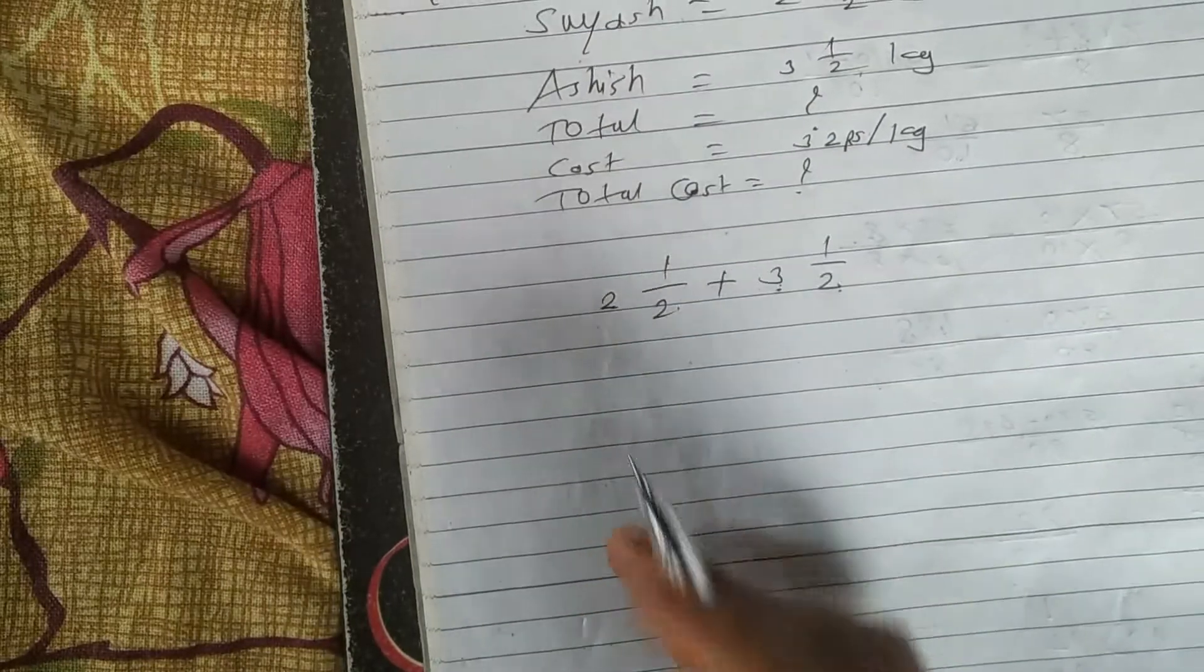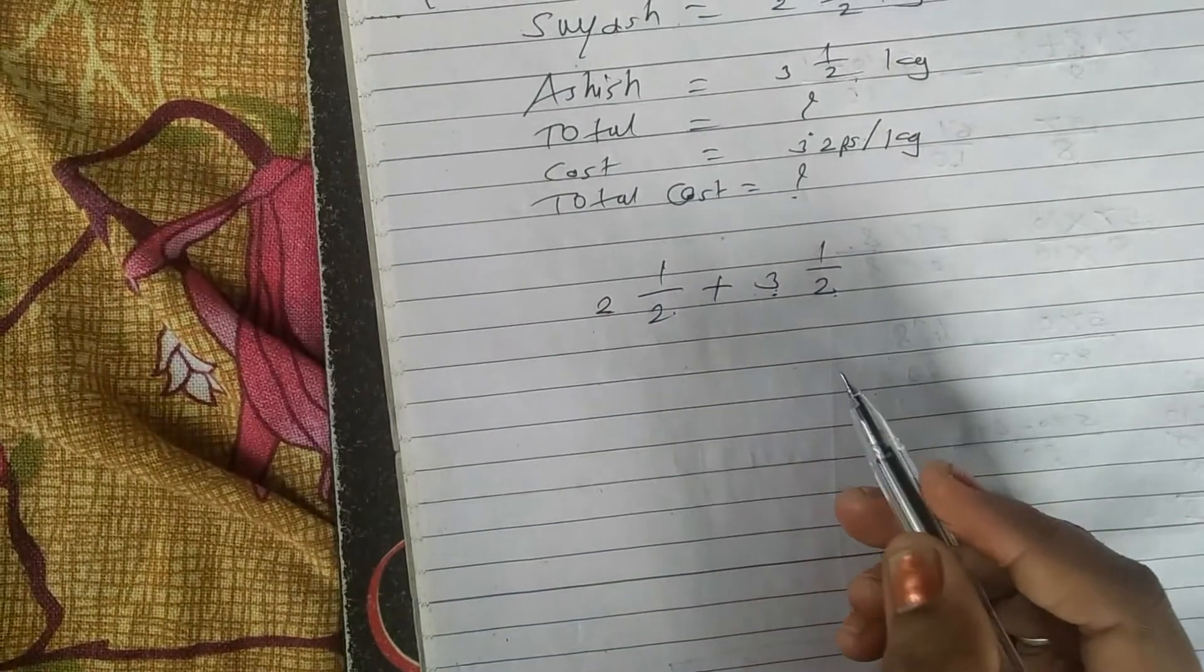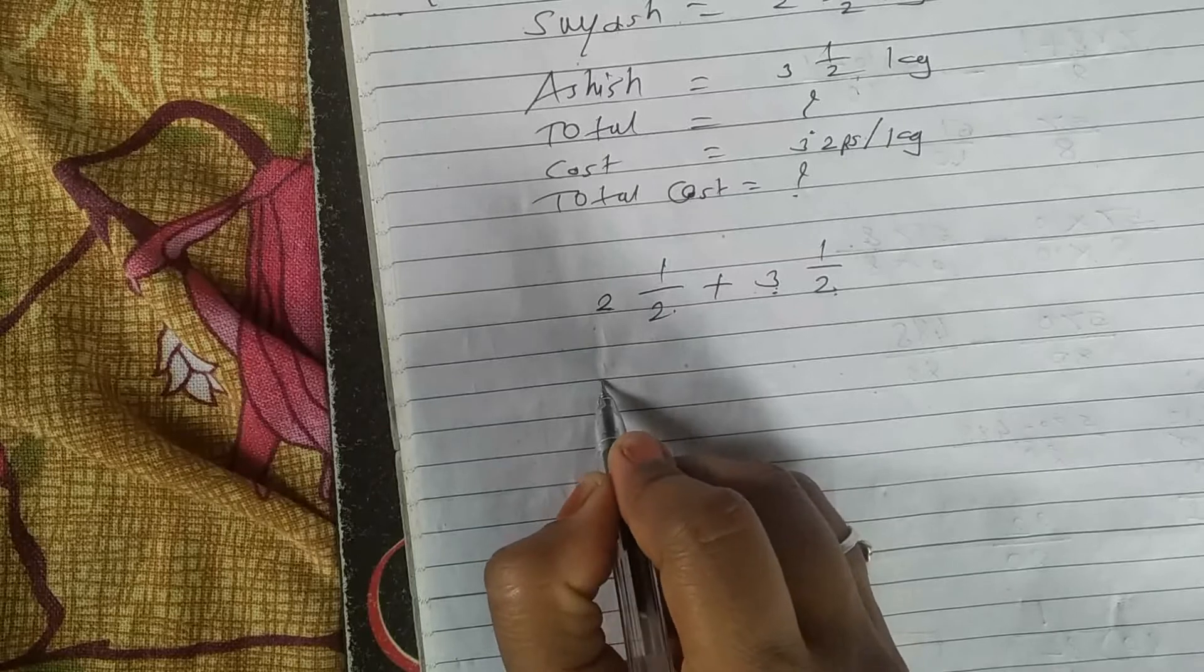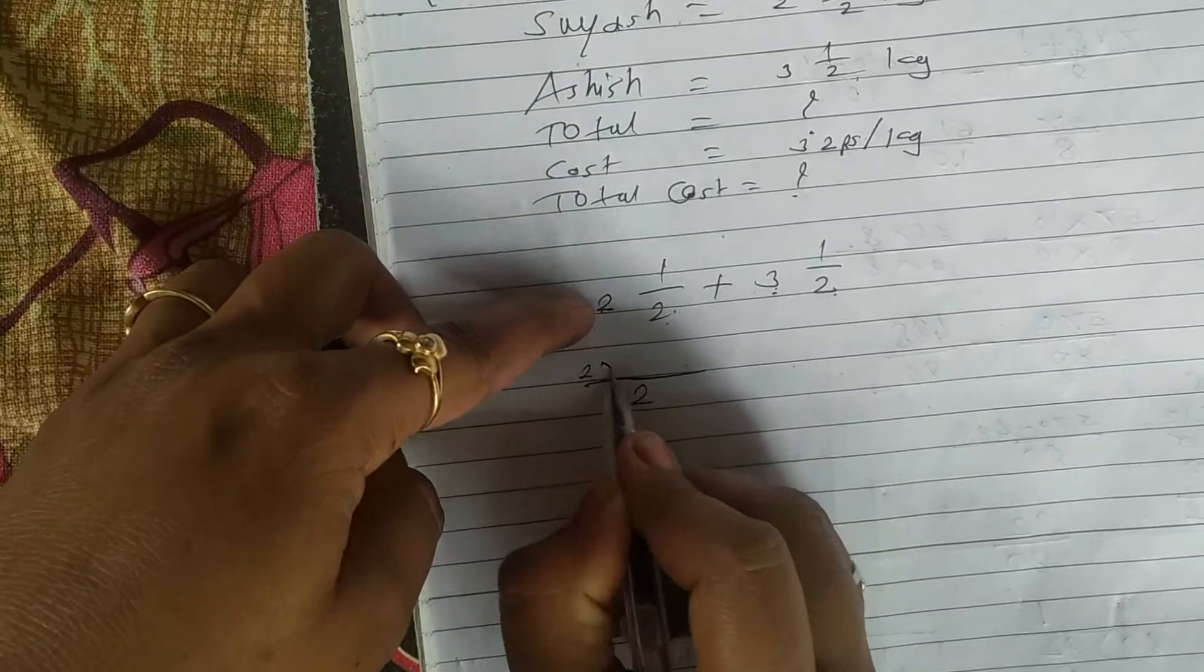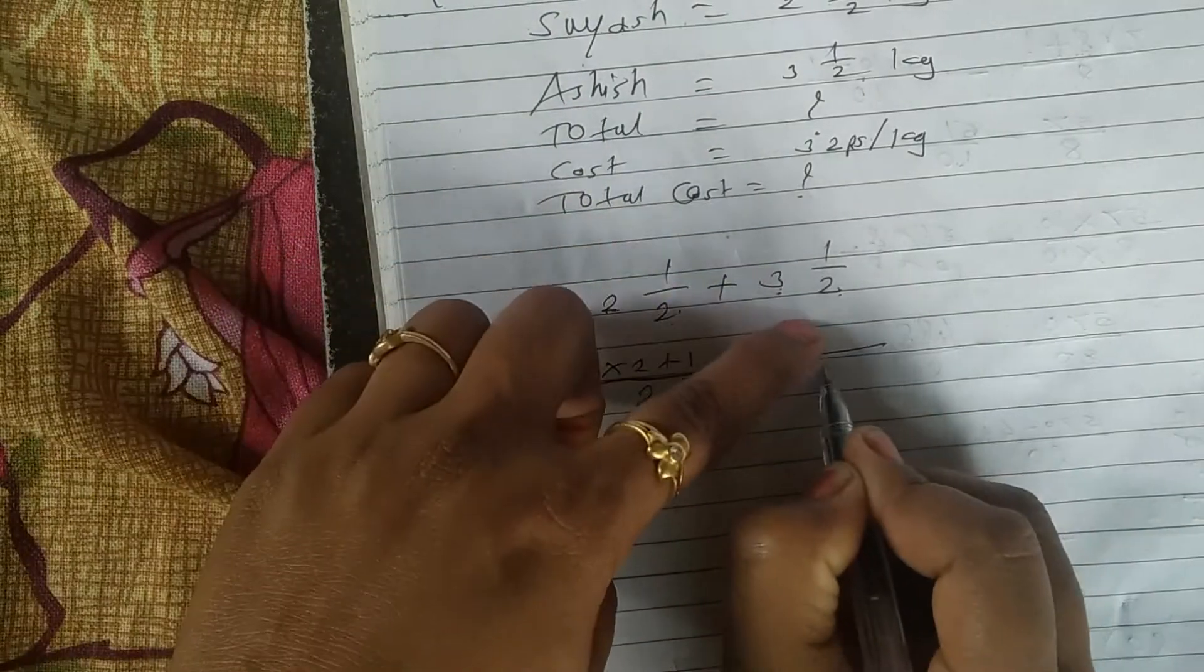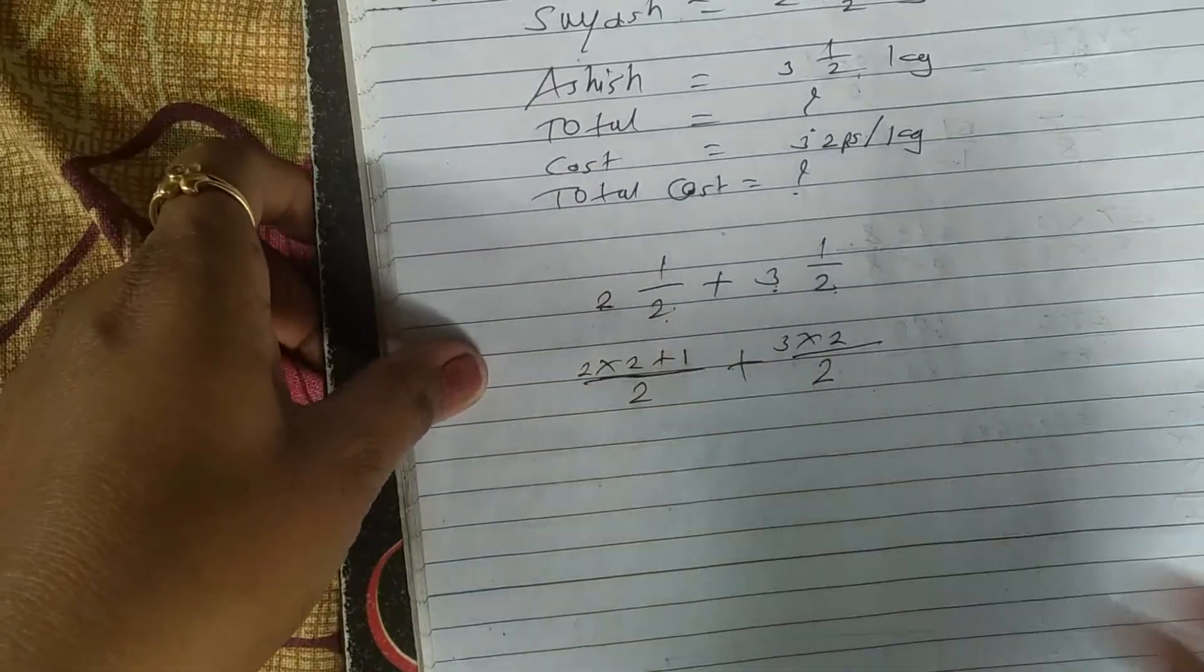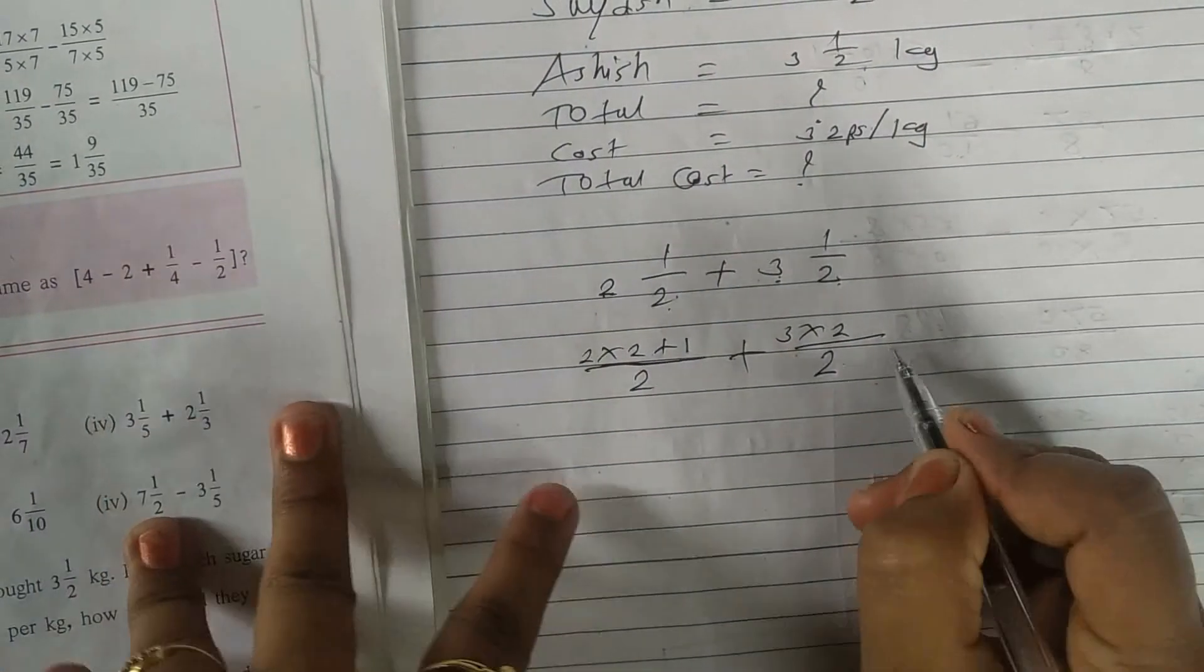But how to write or you can do conversion which you feel easy that you follow. Here two will be same, here two multiply by two plus upside one, here again two is down, three multiply by two plus one.